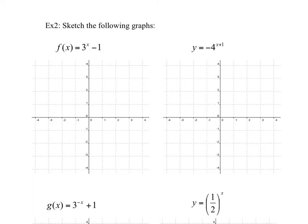For 3 to the power of x, the key points are: 3 to the power of 0 is 1, so we pass through (0, 1) — anything to the power of 0 is 1. When x is 1, the value depends on the base, so 3 to the power of 1 gives the point (1, 3). Now we bring both points down 1, giving us our shifted key points.